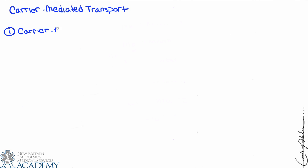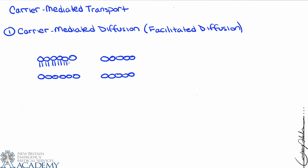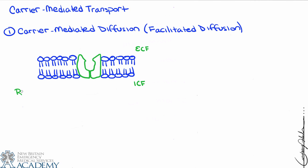We'll start with carrier-mediated diffusion and we'll draw a cell membrane so that we can take a look at the carrier protein. Carrier-mediated diffusion means that a carrier protein is needed in order to complete the membrane transport. You may remember the original example of carrier proteins — we drew the protein in the membrane and then drew a revolving door as the example of the carrier protein.